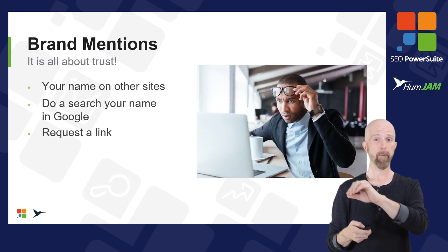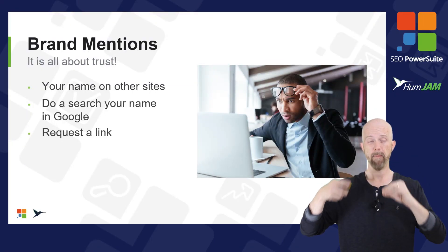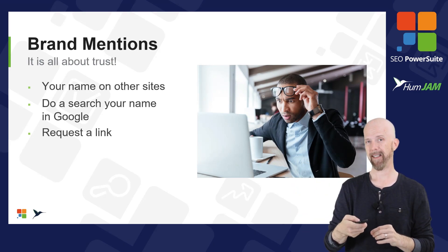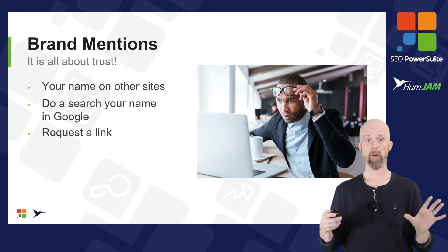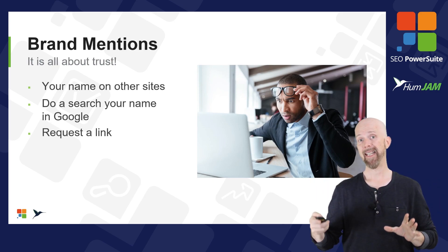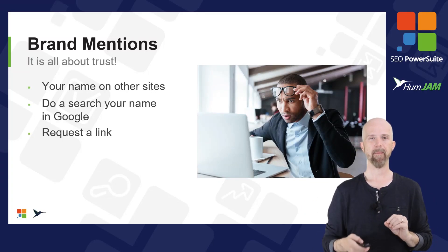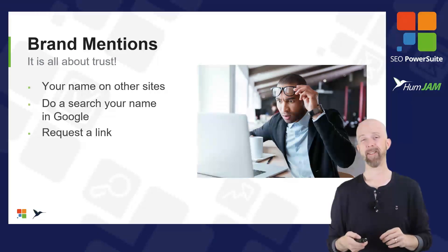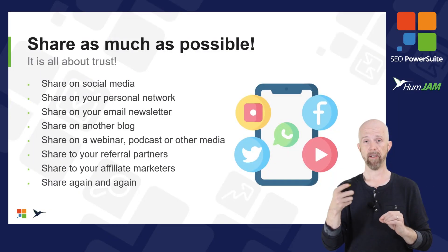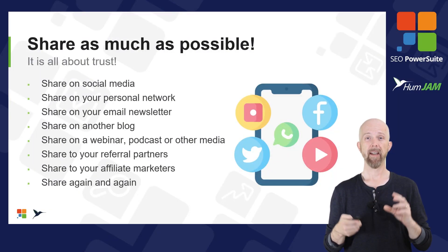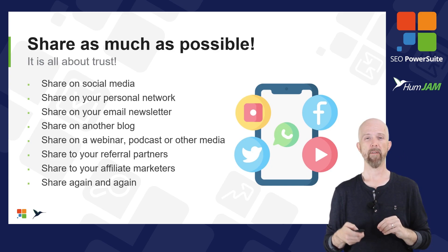Local directories — you want to be found in the directories associated with your company. Google sees those connections. Professional directories, the Better Business Bureau, and the Chamber of Commerce all build the local trust that Google is looking for. Brand mentions are when people are typing in your name or company name, or it's mentioned on other sites but without a link. You can search for your brand and see if there are mentions anywhere without links, then reach out to get a link to your site.